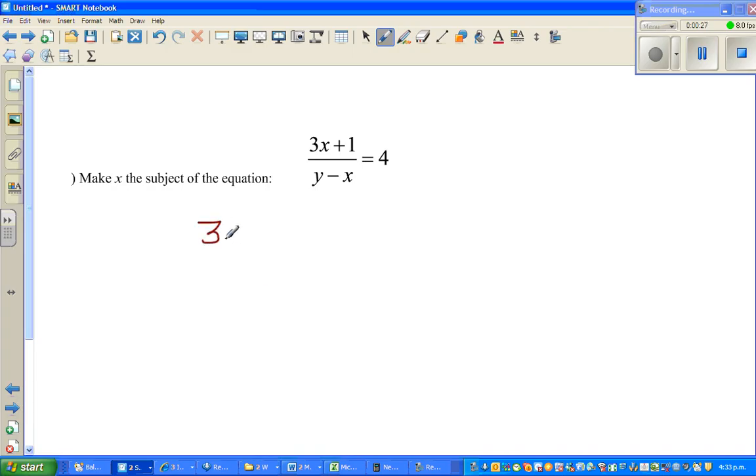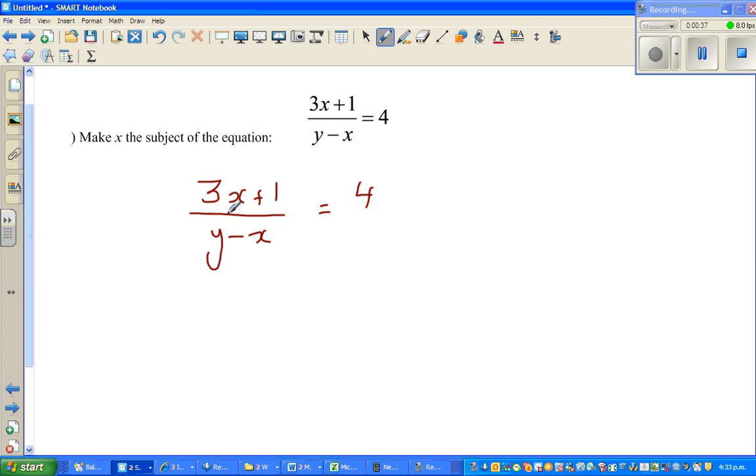Let me write the equation: 3x plus 1 over y minus x equals 4. The first thing I want to do is eliminate this y minus x in the denominator, so I'm going to multiply both sides by y minus x.